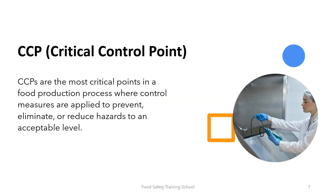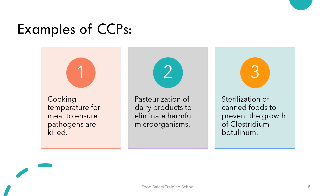And finally, CCPs or critical control points are the most critical points in a food production process where control measures are applied to prevent, eliminate, or reduce hazards to an acceptable level. Failure to control these points could result in a food safety hazard. CCPs are identified through a thorough hazard analysis and are closely monitored and managed. Some examples of CCPs are the cooking temperature for meat to ensure pathogens are killed, pasteurization of dairy products to eliminate harmful microorganisms, and the sterilization of canned foods to prevent the growth of Clostridium botulinum.